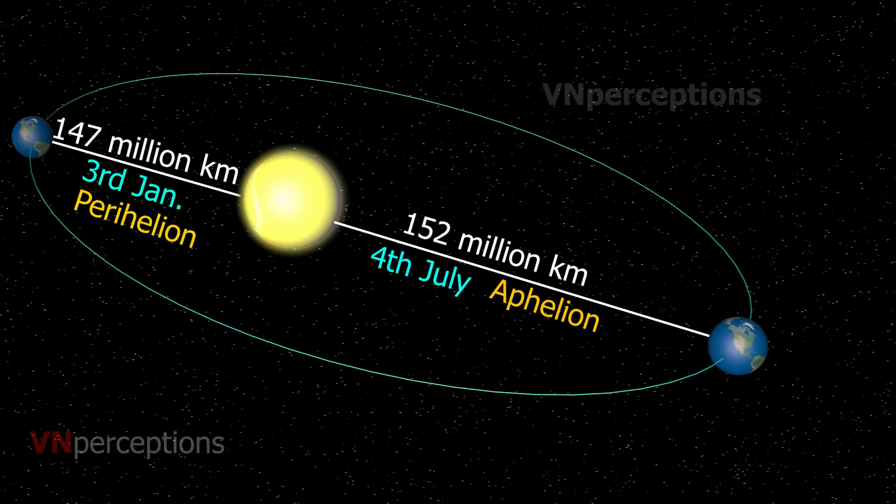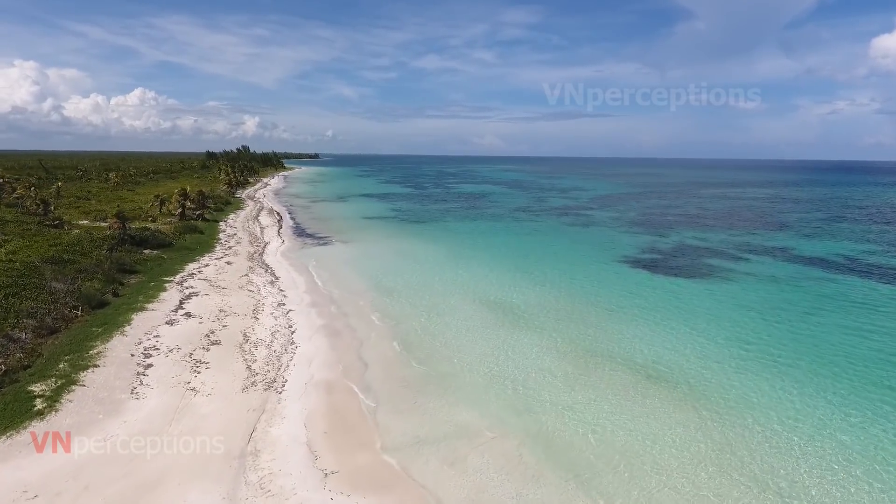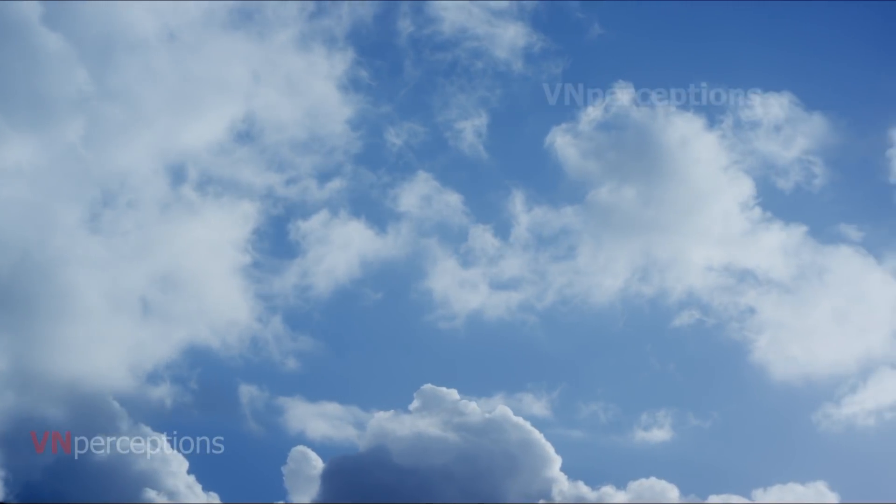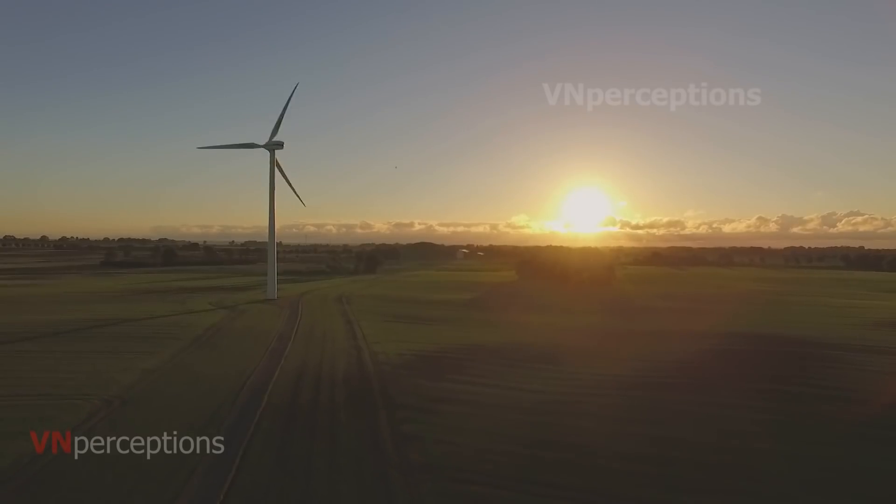The annual insolation received by the earth on January 3rd is slightly more than the amount received on July 4th. However, the effect of this variation in solar output is covered up by other factors, like the distribution of land and sea and atmospheric circulation. Hence, this variation does not have effect on daily weather changes at the surface of the earth.